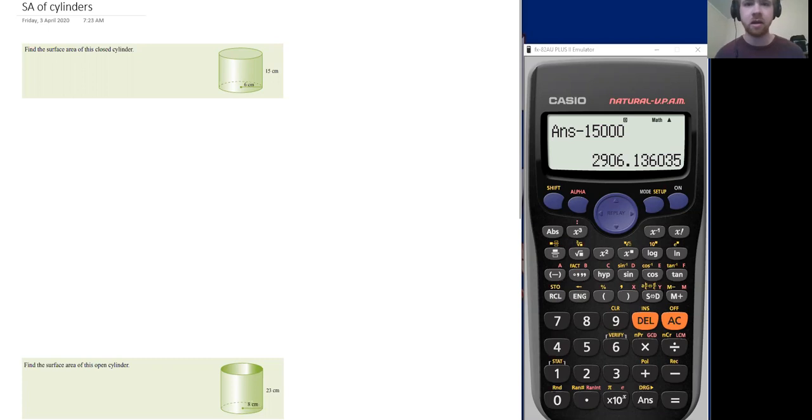Now, first thing we need to understand is that there are two kinds of cylinders. There are closed cylinders and there are open cylinders. So a closed cylinder is kind of like a circular prism, if you will. You've got two circular ends and the sides connected with a sort of folded rectangle.